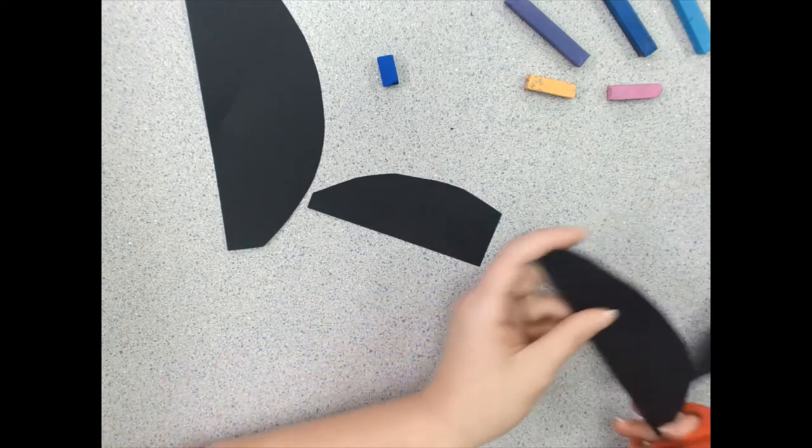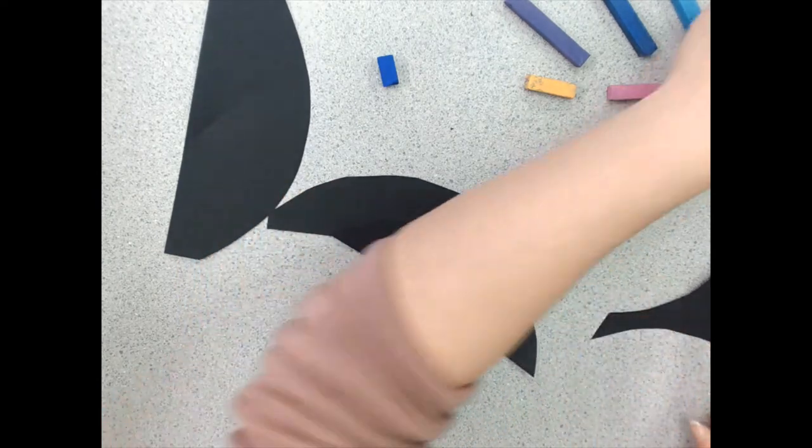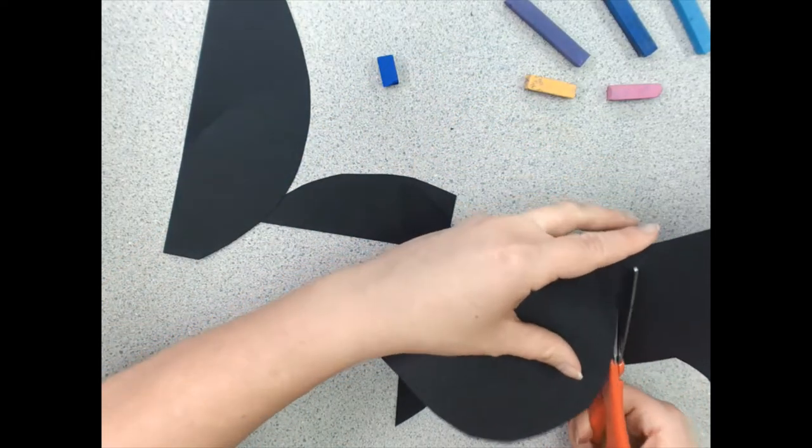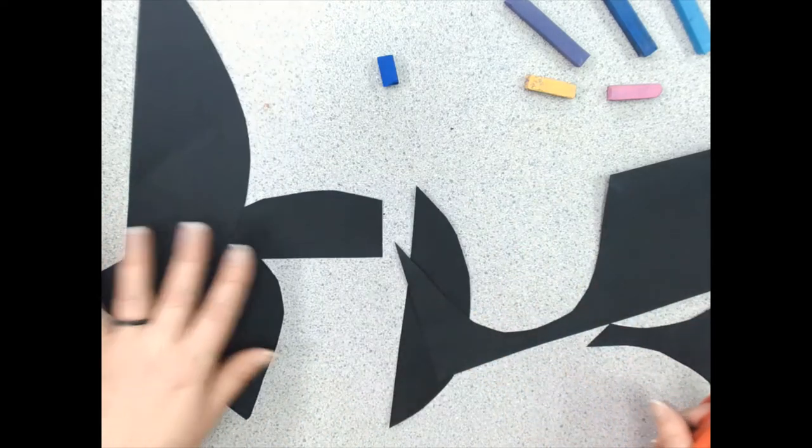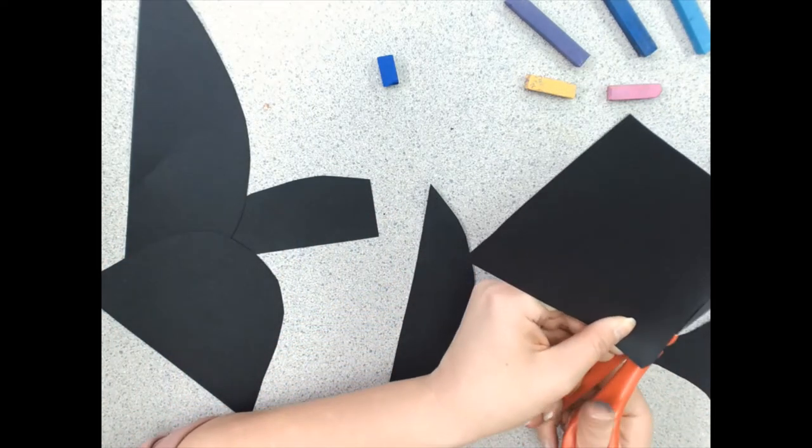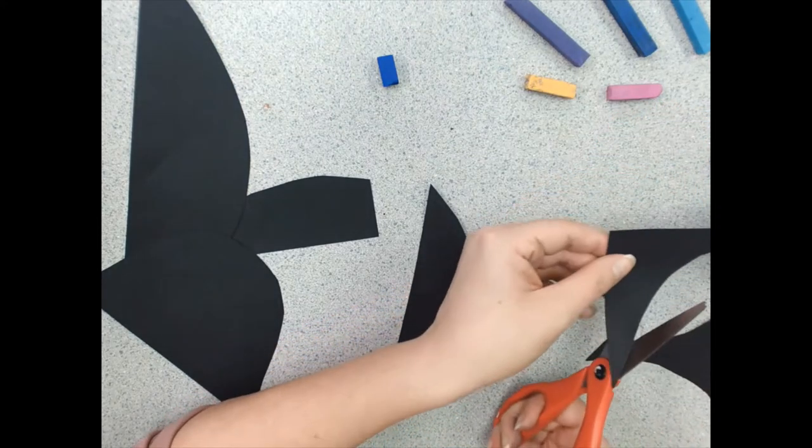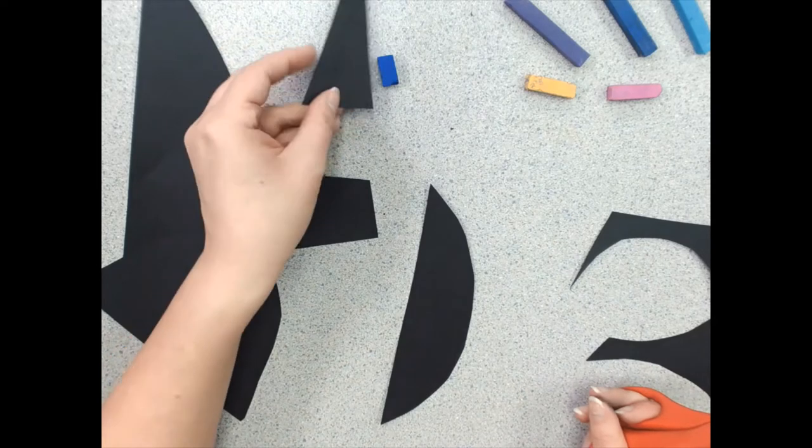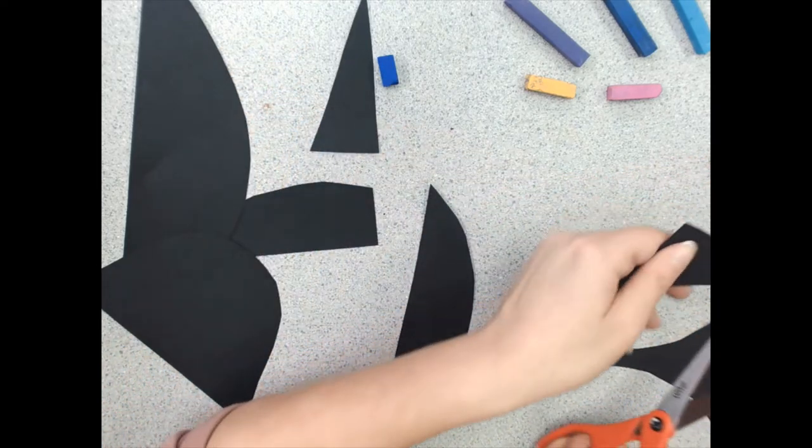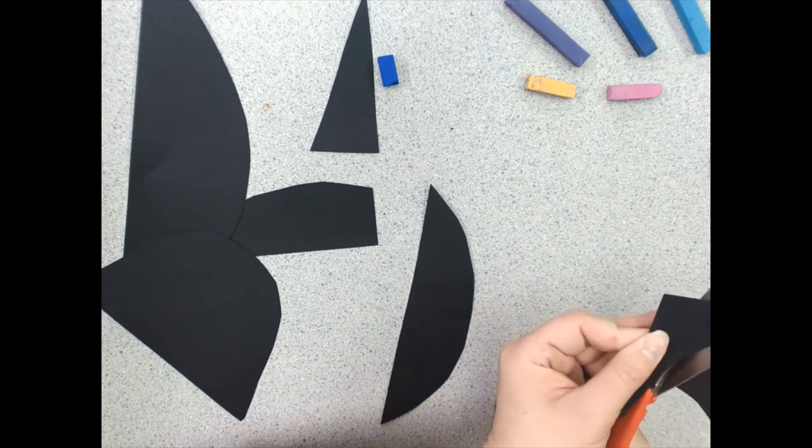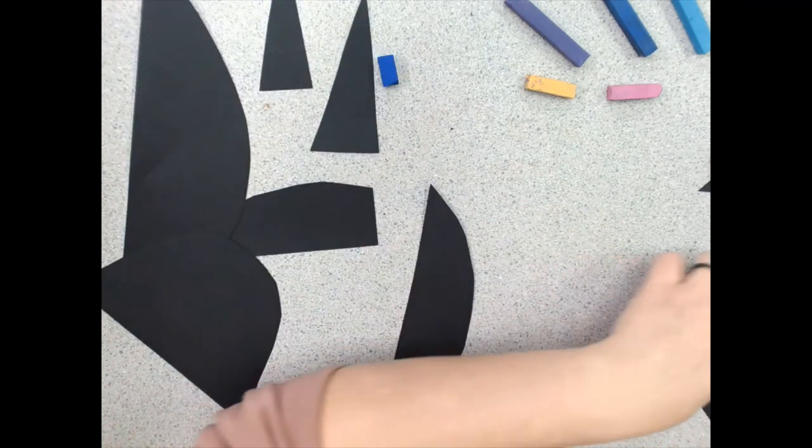Now, if I want to get a little bit more complicated, what I could do, I'm going to cut one big hill here, is I could create some trees. Simple trees are triangles. Remember, as artists, we want to take complicated shapes and make them simple. So I could cut out some triangles like this, and those will look absolutely beautiful.